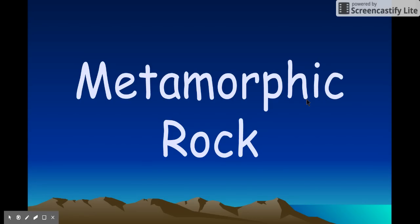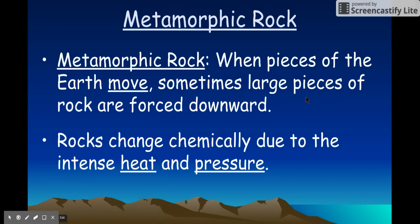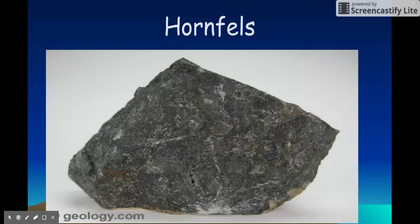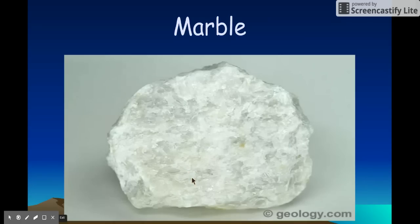Metamorphic rock forms when pieces of the Earth move, causing tremendous heat and pressure to change a rock. The rock is not melting — it's getting heated but not enough to melt. If it were melting, that would be igneous rock. Here in this diagram, rocks close to magma might turn metamorphic, and where two pieces of the Earth are pushed together, the rock under pressure might also turn metamorphic. Examples of metamorphic rocks include amphibolite, hornfels, and marble.